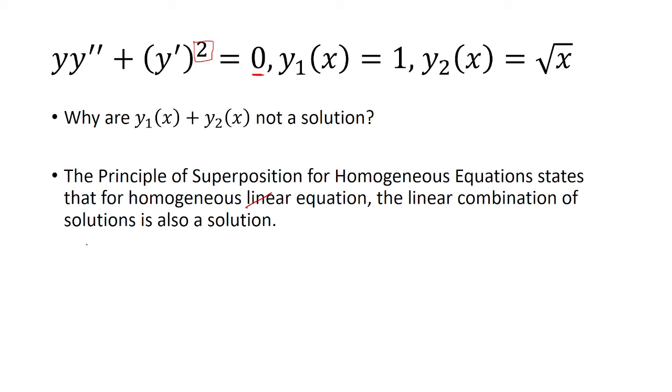Now if you want to prove this, you can say, well, let y equal the sum of these two solutions. So then y prime will be 1 over 2 root x. And then y double prime will be negative 1 fourth x to 3 halves power.